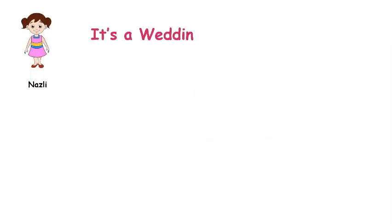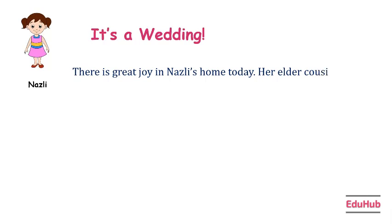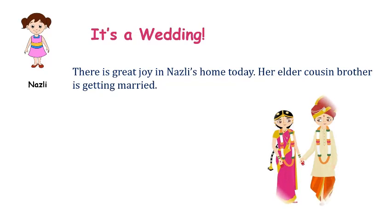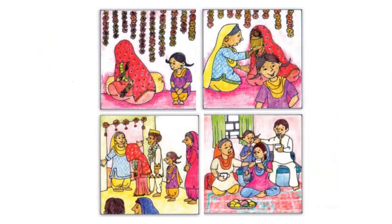Next is Nazli's story: It's a Wedding. There is great joy in Nazli's home today — her elder cousin brother is getting married. We can see how Nazli's family has changed after her cousin got married. So changes happen in families due to many reasons like birth, transfer, marriages, and so on.